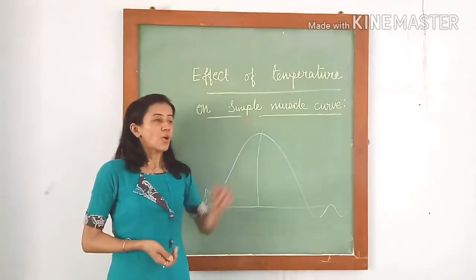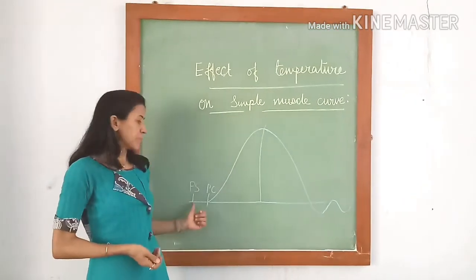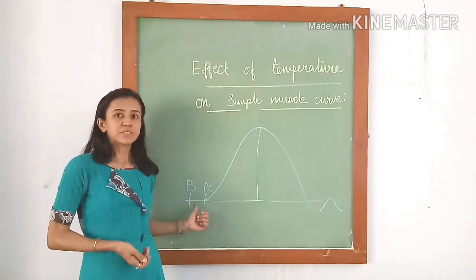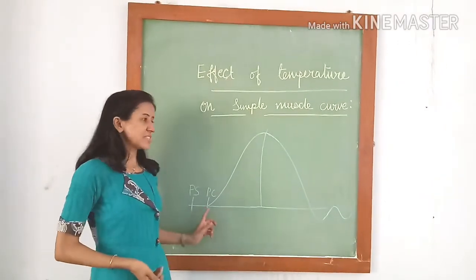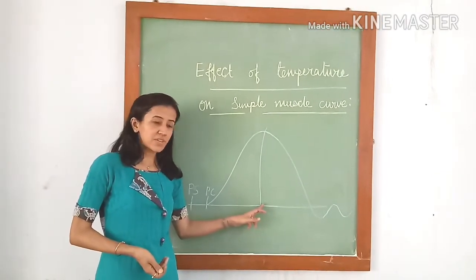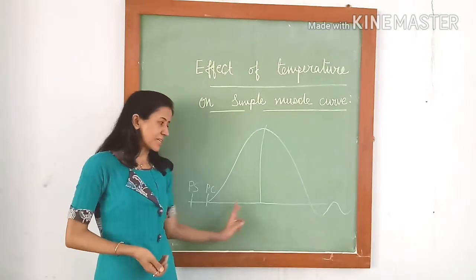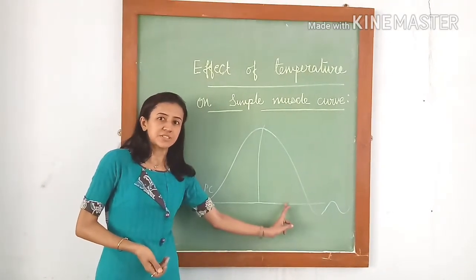Effect of temperature on the simple muscle curve is studied with the same point of stimulus, same strength of stimulus, and same baseline. With change in temperature, there is change in the amplitude of contraction as well as changes in various periods: latent period, contraction period, and relaxation period.